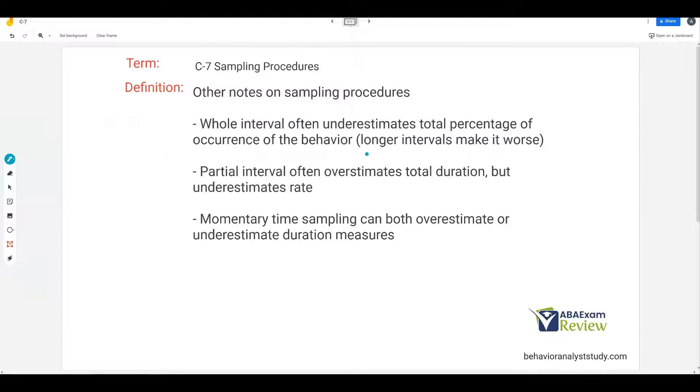Let's end on a couple notes about underestimation and overestimation. First, whole interval often underestimates total percentage of occurrence of the behavior. Why would whole interval underestimate percentage of occurrence? Well, if I have a 10-second interval and the behavior occurs for 9 seconds, I'm not counting it as a response. So the data is going to indicate that behavior didn't occur at all in that interval, leading to an underestimation of occurrences of behavior.